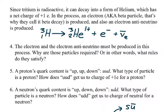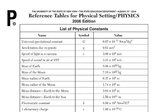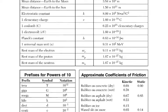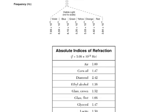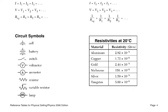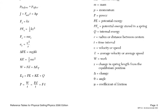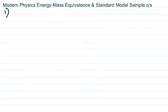Numbers five, six, and seven get into the standard model of particle physics, covering the proton, the neutron, and a kaon — which you probably have not heard of — and things like mesons, baryons, antiparticles, and all that. So we have our handy reference table here to help us: pages one through five. We probably won't need page six. Let's get started with sample question one.